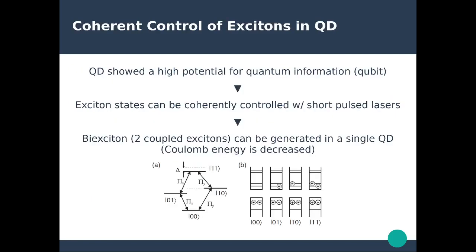Quantum dots also show high potential for quantum information as they can serve as qubits. Excitonic states can be controlled using short-pulse lasers, and bi-excitons can be generated in single quantum dots. The state of those excitons can encode a qubit, with states representing: no exciton, one exciton on the second level, one exciton on the first level, or two excitons simultaneously.